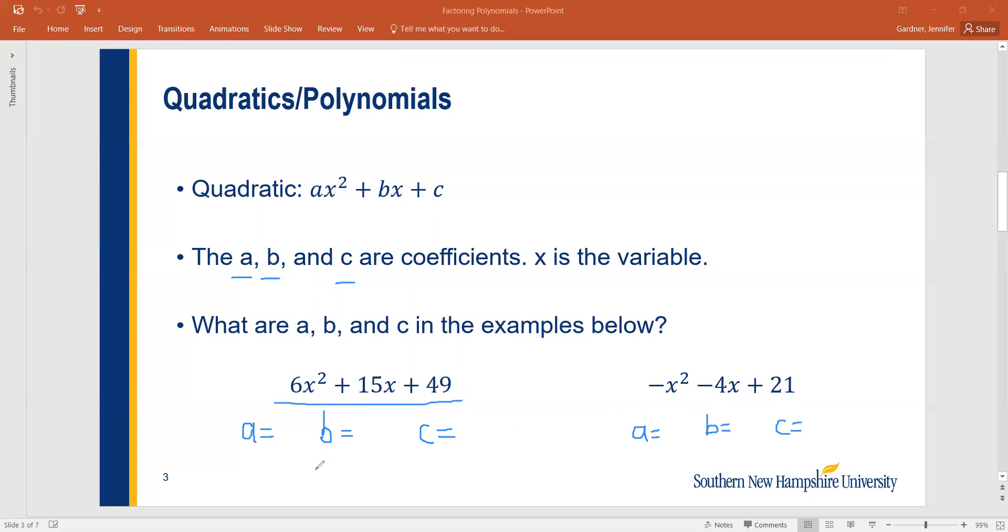In this first example, A is going to be 6, B is going to be 15, and C is going to be 49. Notice I didn't include the x's. The coefficients A, B, and C are just the numbers. On the right-hand side equation, we have to make sure to include the negatives. So we have a negative 1, a negative 4, and we have 21. And 21 is positive because it did not have a subtraction symbol before it.